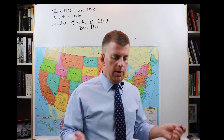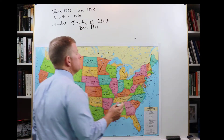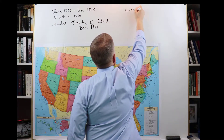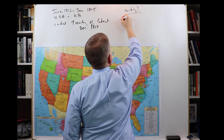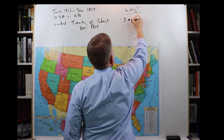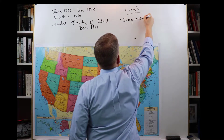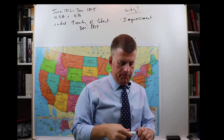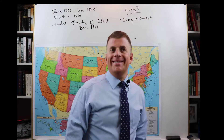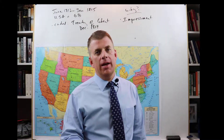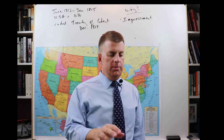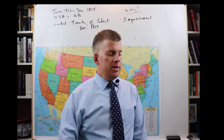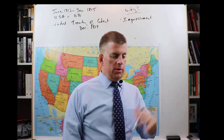Why did it start? There are three issues. The first was called Impressment. The context is that England and France had been at war since about 1803 — they were at war a lot. About 1803 they were at war again, and the U.S. stayed out of that fight. They were neutral in that war.